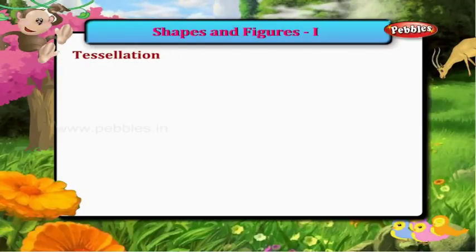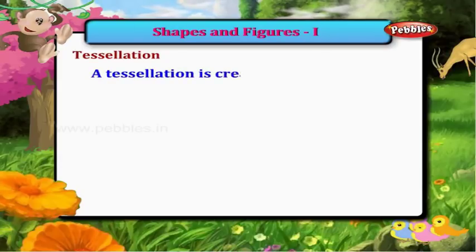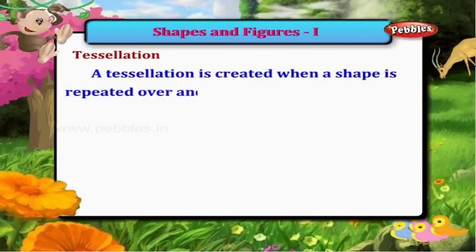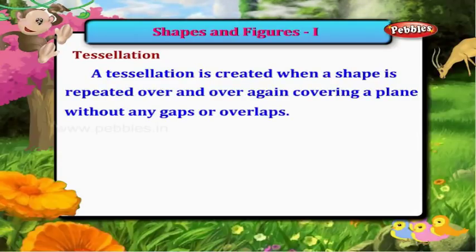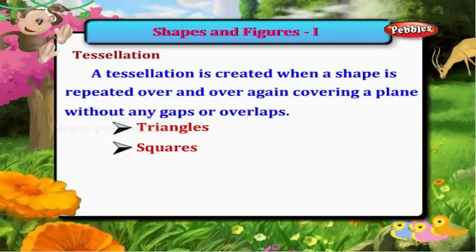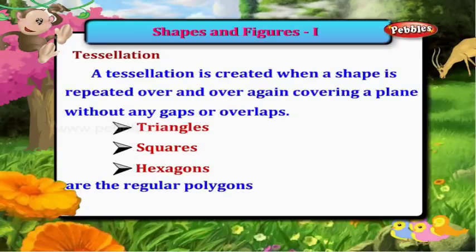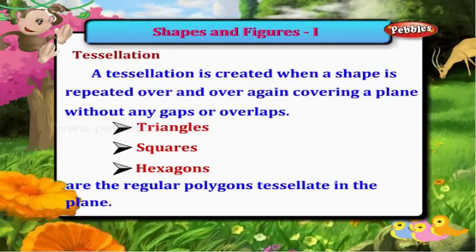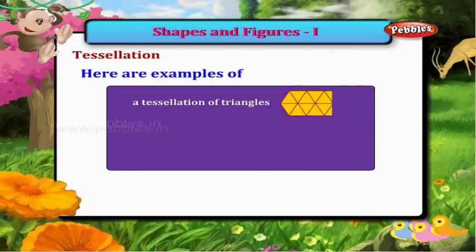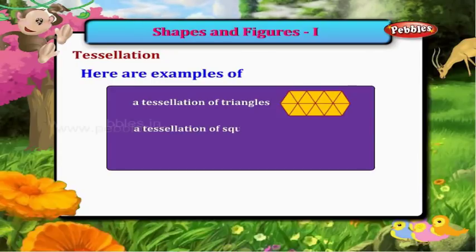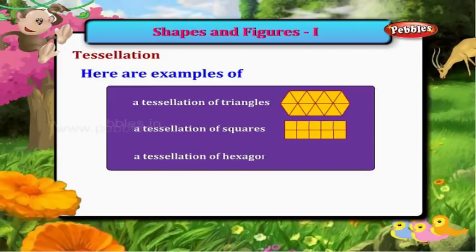Tessellation. A tessellation is created when a shape is repeated over and over again covering a plane without any gaps or overlaps. Triangles, squares and hexagons are the regular polygons that tessellate in the plane. Here are examples of a tessellation of triangles, a tessellation of squares, and a tessellation of hexagons.